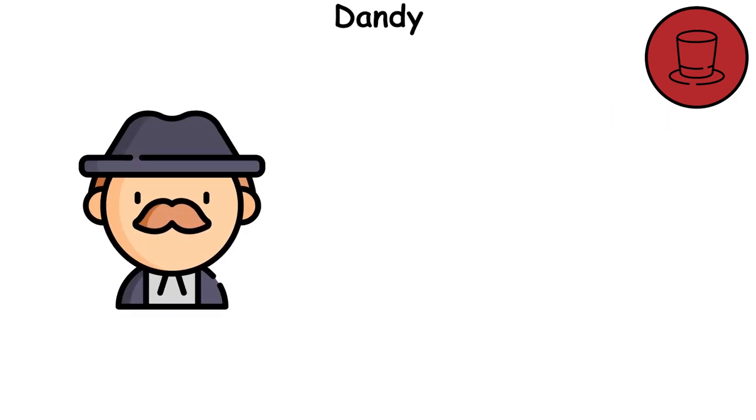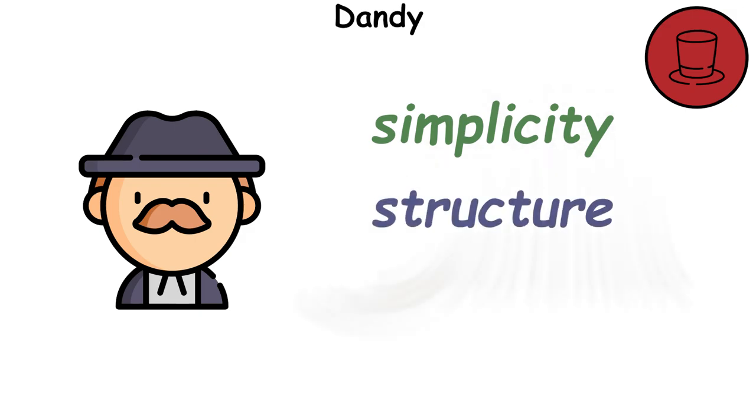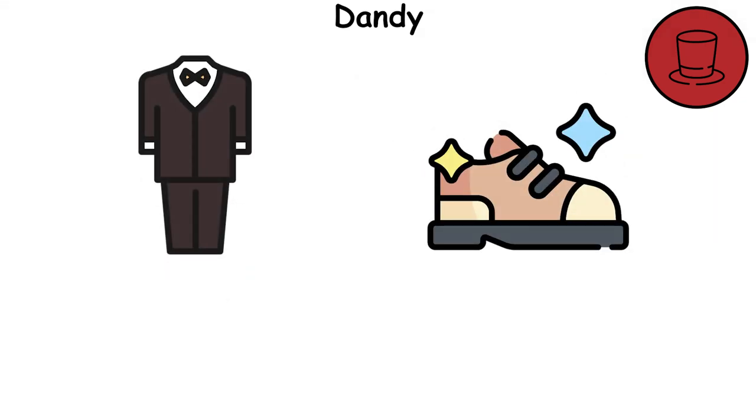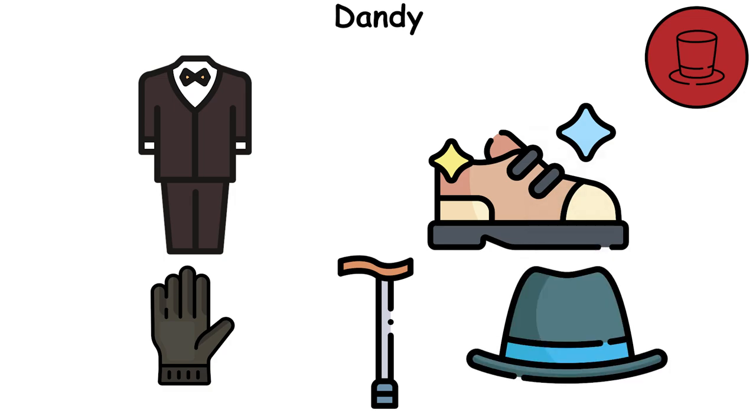Dandy style is characterized by its simplicity, structure, and understatement. Classic elements of this style include well-tailored suits, polished shoes, and accessories such as gloves, walking sticks, and top hats.